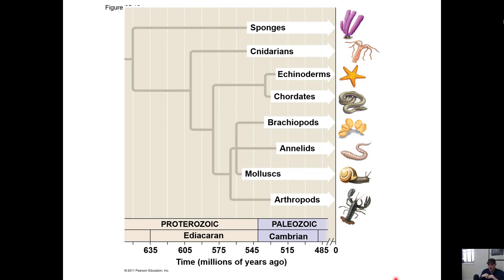Now we're going to move into other animals. What I like about this cladogram is it shows you when we have the first fossil evidence of these groups emerging. Some of them show up right at the end of the pre-Cambrian, but by the end of the Cambrian we have all of these phyla in existence - what they call the Cambrian explosion, with this massive diversity of life showing up during that time.